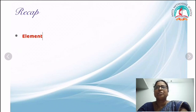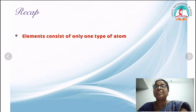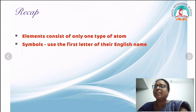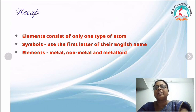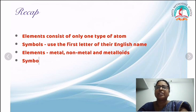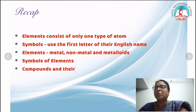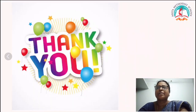Recap: you learned that an element consists of only one type of atom, with gold as an example. Symbols use the first letter of the English name. Elements are classified as metals, non-metals, and metalloids. We also learned the symbols of elements, the constituent elements of compounds, and compounds and their uses. Thank you children, God bless.